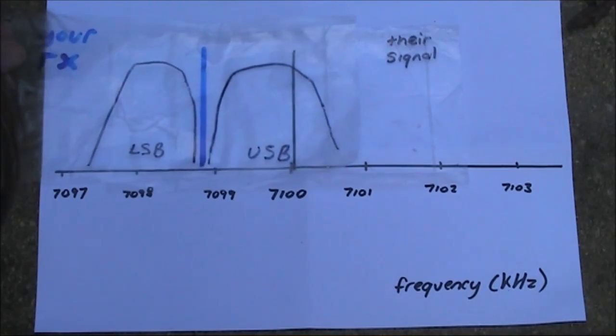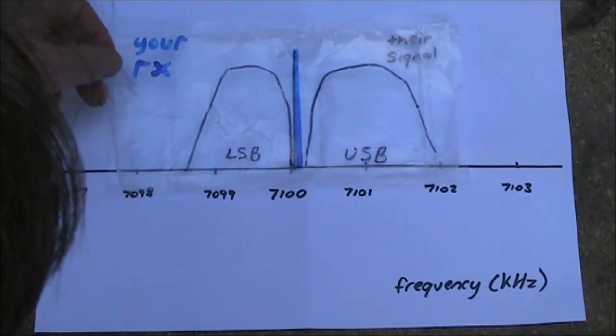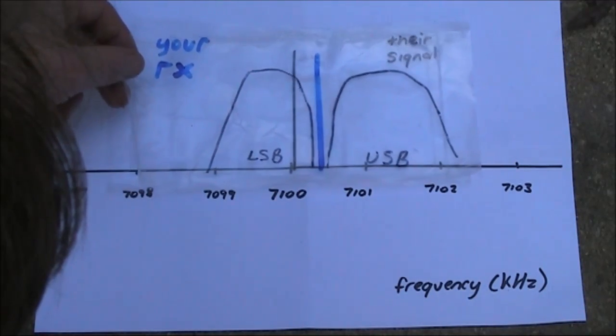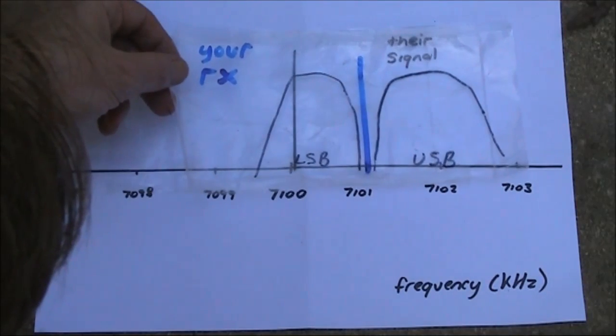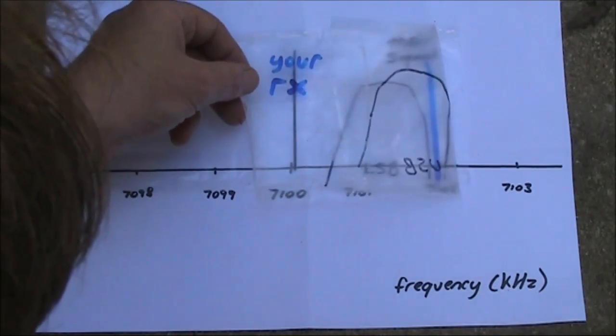Just to repeat, we're tuning up, getting closer to the carrier until we're at zero beat, and then you keep tuning up, and you go away from the carrier with the beat frequency increasing until you've gone past it.